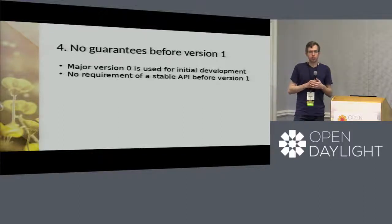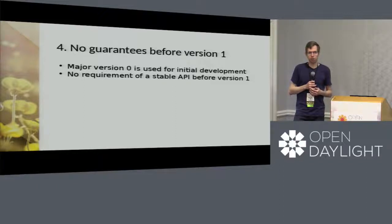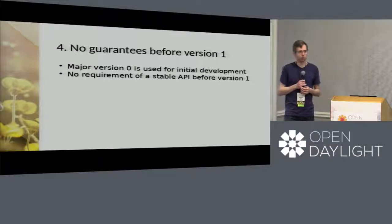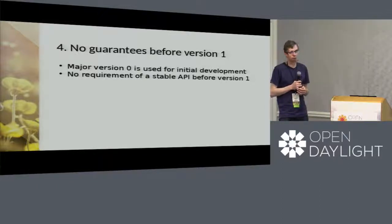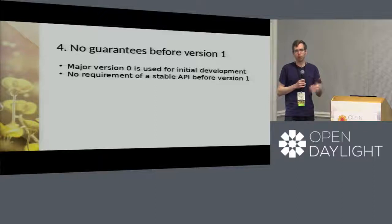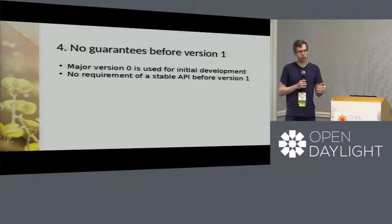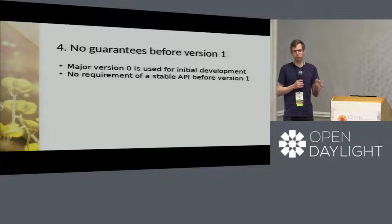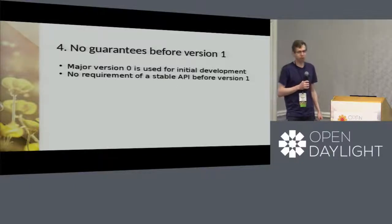Point four relates to version zero. Version zero does exist, but there are no guarantees as far as semantic versioning is concerned — it doesn't apply until version one. When you're starting something, you have no idea what would make sense as a public API, so you use version 0.1, 0.2, and so on. As long as you don't have version one or greater in the first component, there are no guarantees.